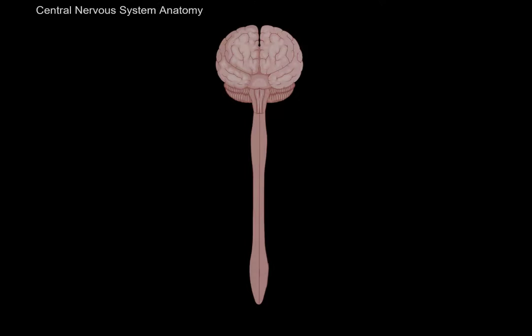What's up, Medite here. Let's talk about the anatomy of the central nervous system. In this segment, we will be talking about the external anatomy of the spinal cord — basically going through everything you need to know in regards to what the spinal cord is and what you will find grossly on the spinal cord.